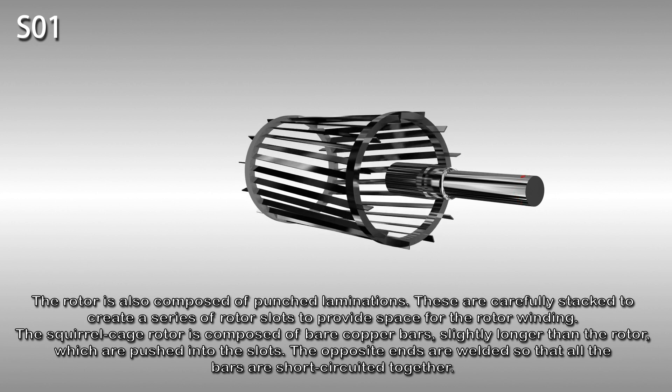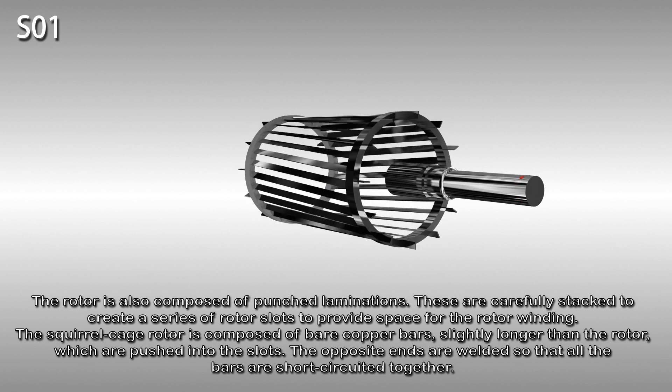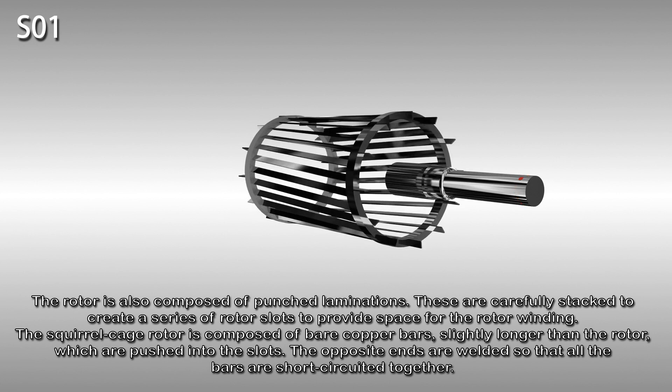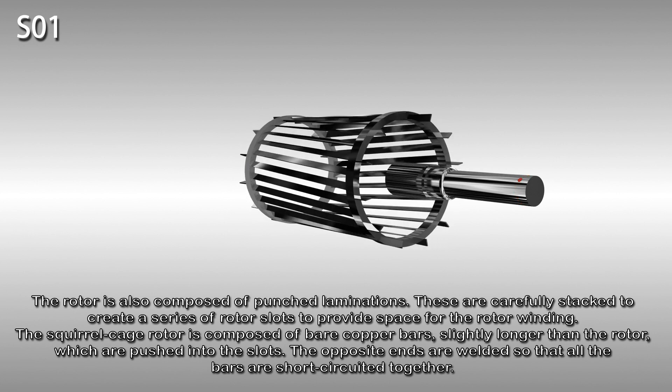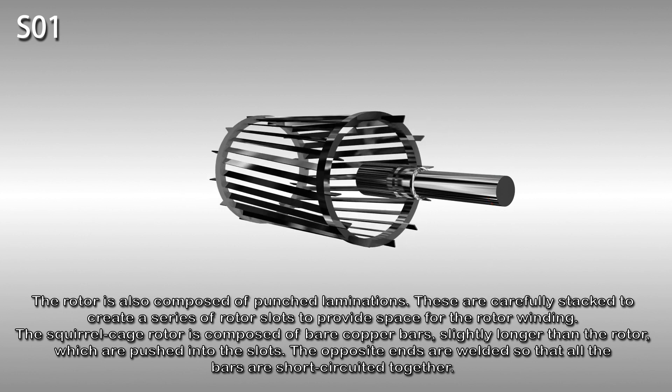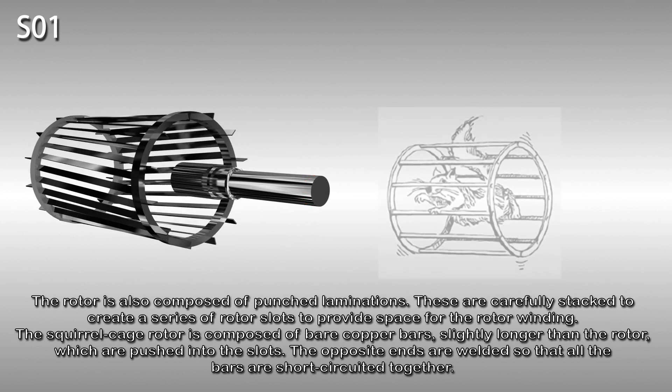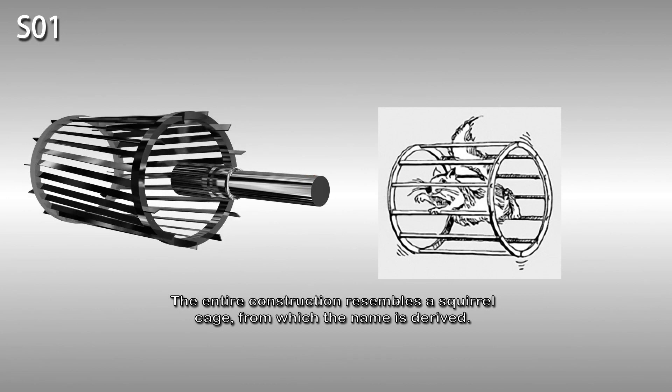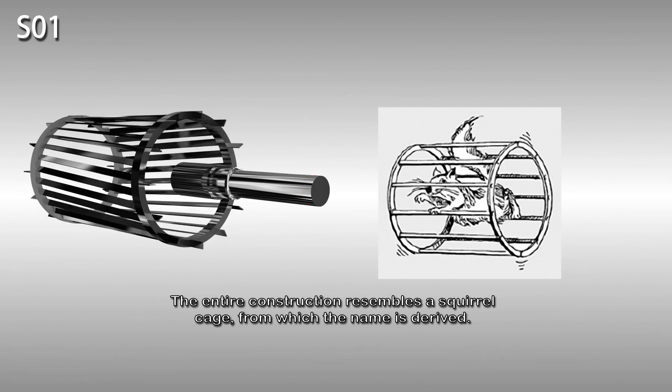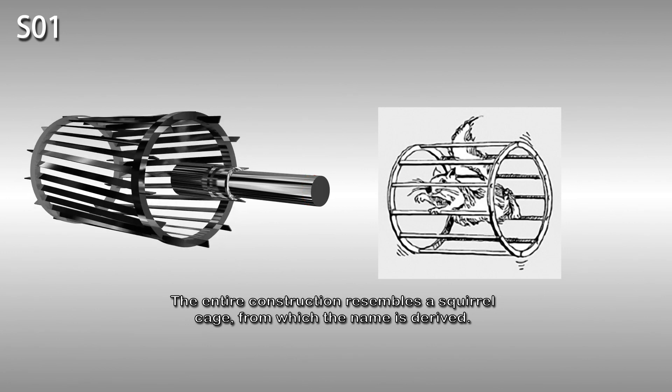The squirrel cage rotor is composed of bare copper bars, slightly longer than the rotor, which are pushed into the slots. The opposite ends are welded so that all the bars are short-circuited together. The entire construction resembles a squirrel cage from which the name is derived.